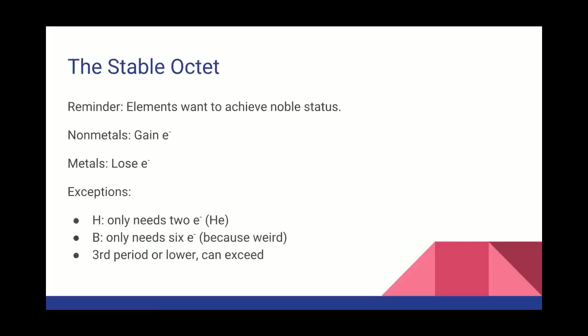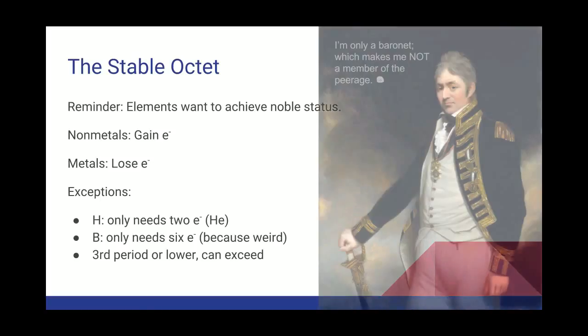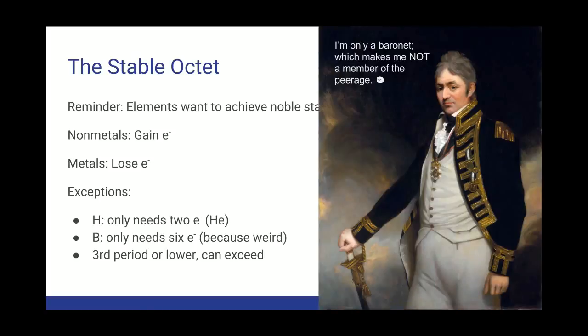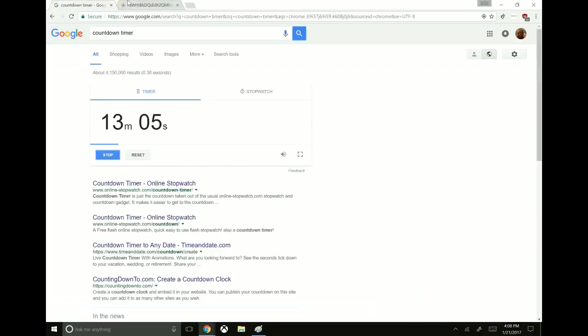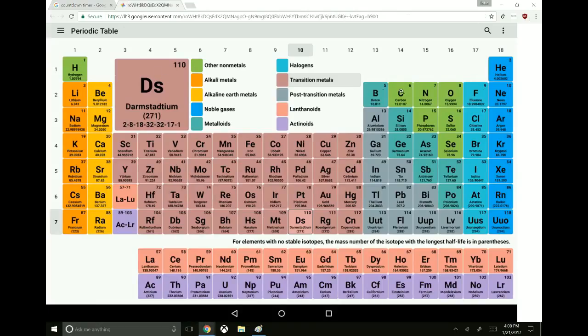Another way to think about how bonds are formed is the stable octet. Remember from unit one that the elements want to achieve noble status. They want to look like the nearest noble gas. Not like this guy, he has a title, he's a baronet, but he's not a member of the peerage. He's not a lord, he's not allowed to wear a coronet in the presence of the queen. Poor guy, look how sad he is. So that means nonmetals want to gain electrons, metals want to lose electrons, and they want to end up with the stable octet. Eight electrons, so-called, because 2s, 6p, that's a total of eight. We tend to ignore the d electrons when we're talking about this. So just the stable octet is what we call it.